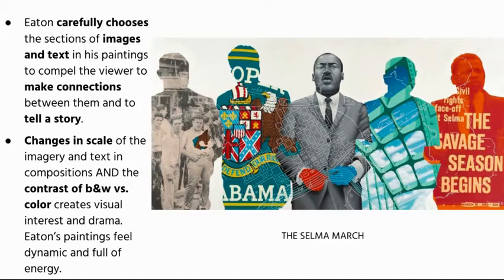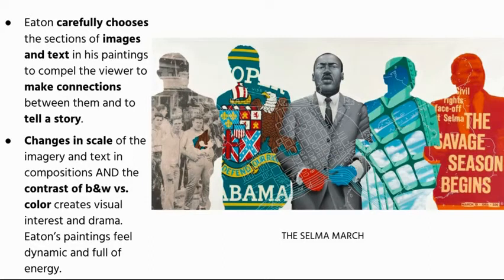Eaton carefully chooses the images and pieces of images that show through in his work, and he uses text as well, compelling the viewer to make connections between the various parts and to recognize that they're telling a story. He actually did a series called Legacy — not the same assignment you guys are doing — based on people who were important to him in his own life, like family, friends, artists, and his father. He very carefully chose imagery inside the collage background that tells a little bit of the story of each person and their legacy to him.